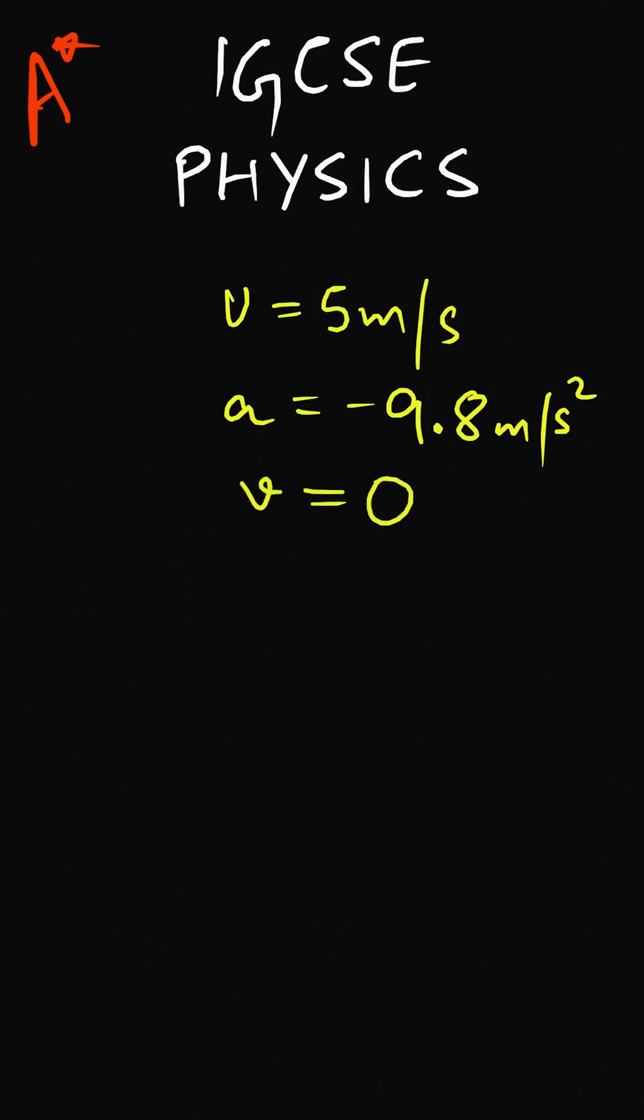Since here the acceleration is minus 9.8 meters per second squared which is actually a constant, therefore we can use the equations of motion to solve the problem. On the basis of the information that we have, the equation of motion that suits the best is 2AS equals to V square minus U square.